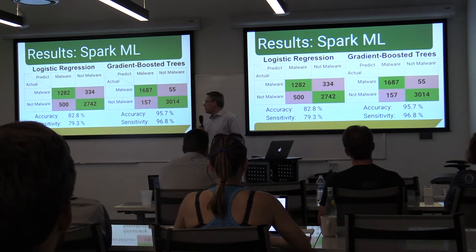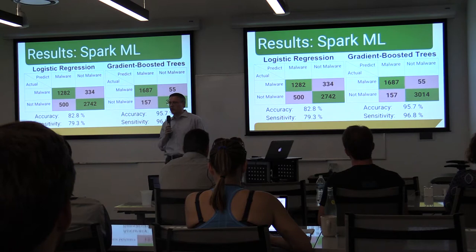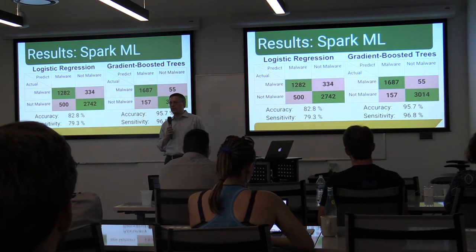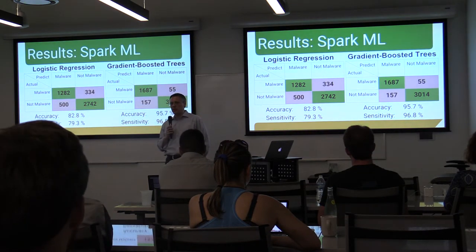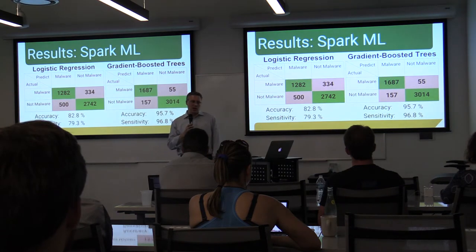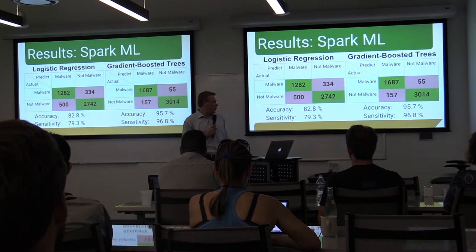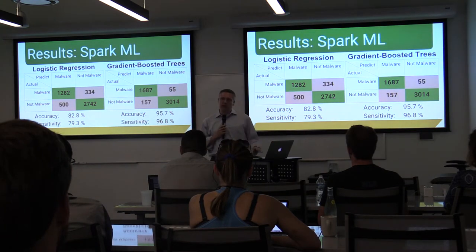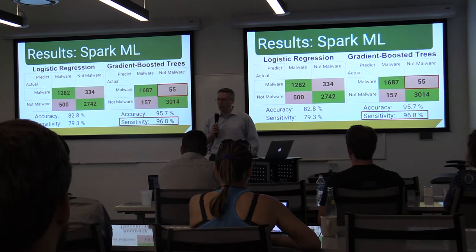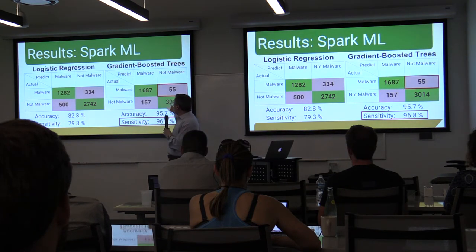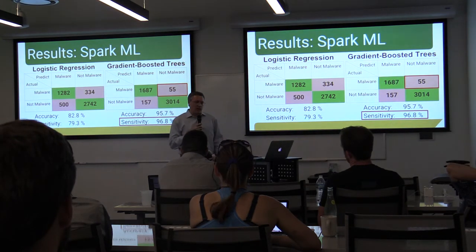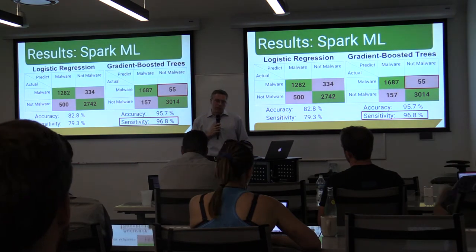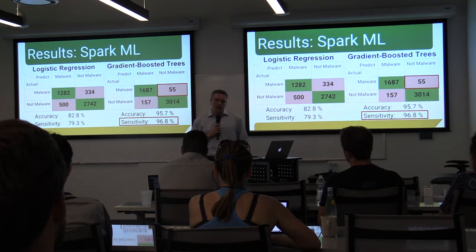At the end of the day, I trained two different classification models: logistic regression as a baseline standard classifier, and gradient boosted trees, which is a more advanced model with greater ability to discern subtle distinctions. The gradient boosted trees achieved about 96% accuracy. But when you're looking at malware, what you really care about is false negatives — cases where you say it's not malware but it actually was. That's measured through sensitivity, and I achieved about 97% sensitivity, all done on a cluster in AWS.